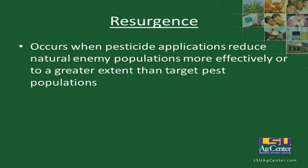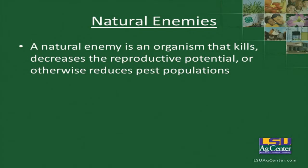Resurgence occurs when a pesticide application reduces natural enemy populations more effectively than target pest populations. The insecticide kills off our natural enemies — our beneficial insects — better than it kills the target pest. A natural enemy is an organism that kills and decreases the reproductive potential or otherwise reduces pest populations.